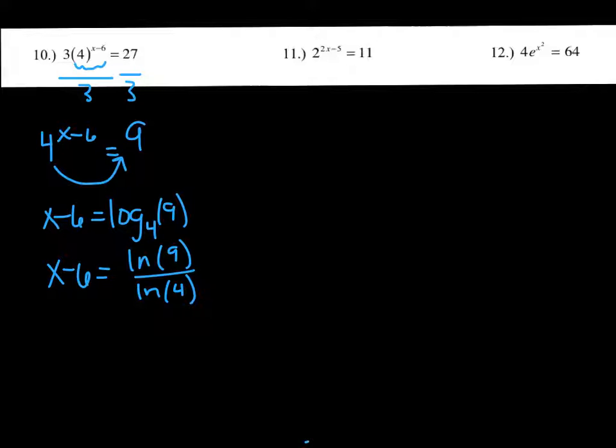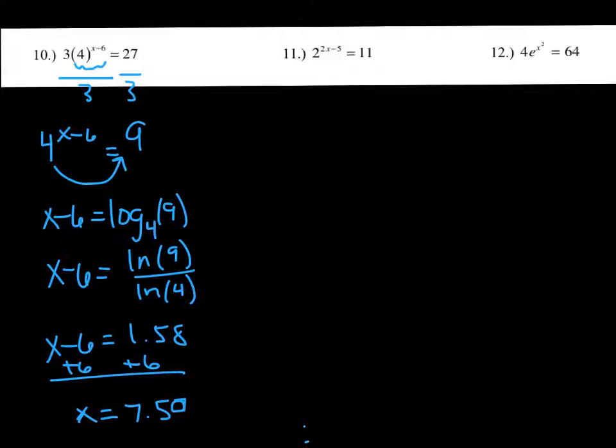So either one will work. So when we do this, natural log 9 divided by natural log 4, you get 1.58 about. And then all you do is add your 6 over. So x would equal 7.58. So that's how you would undo your exponential part of your equation. That's the second method for solving exponential equations.